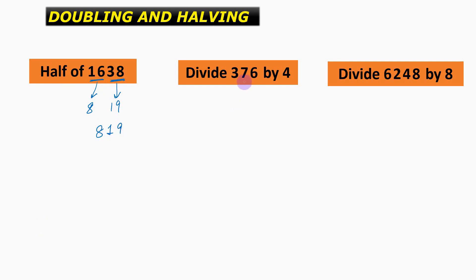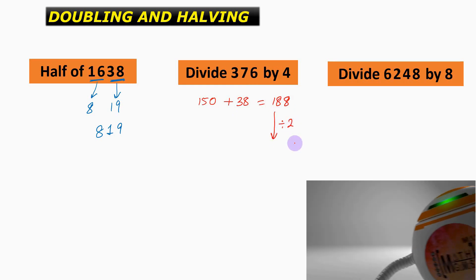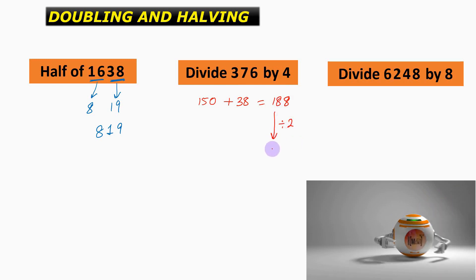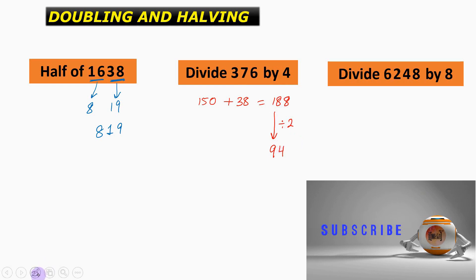For the next question we need to divide 376 by 4. Division by 4 actually means division by 2 done 2 times. So first we divide 376 by 2: 300 divided by 2 gives 150, plus 76 divided by 2 gives 38, giving us 188. But that is not all — now we need to divide this number by 2 again. 18 divided by 2 gives us 9 and 8 divided by 2 gives us 4, thereby giving us the answer as 94.